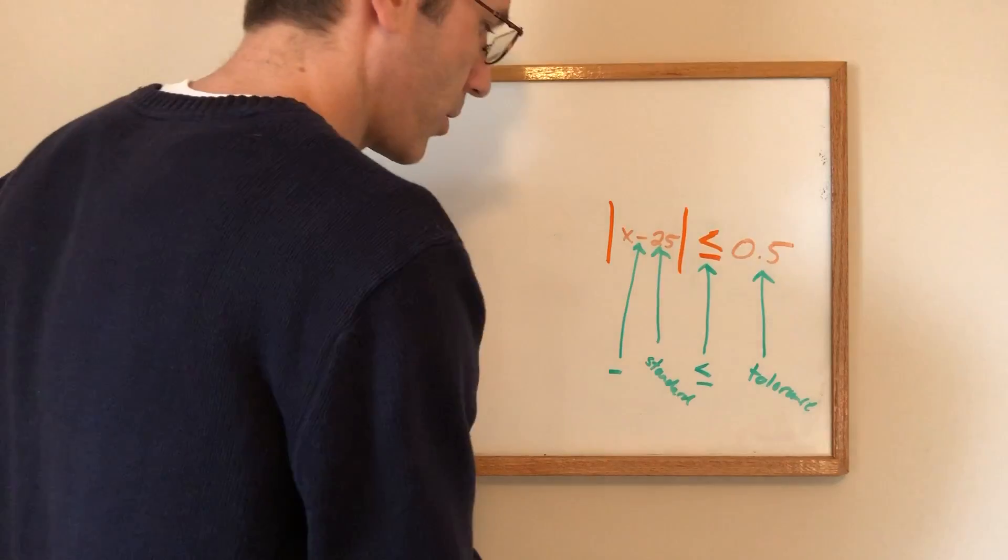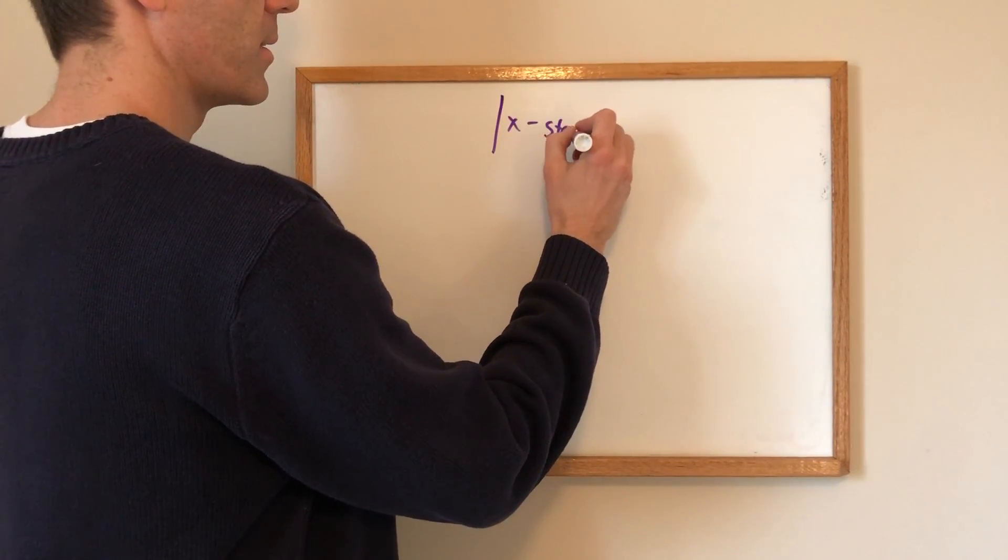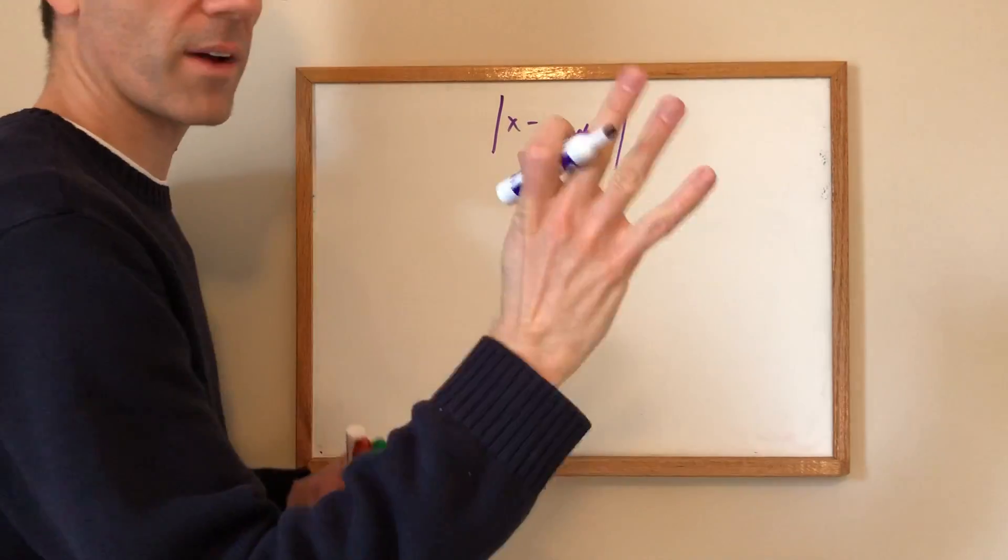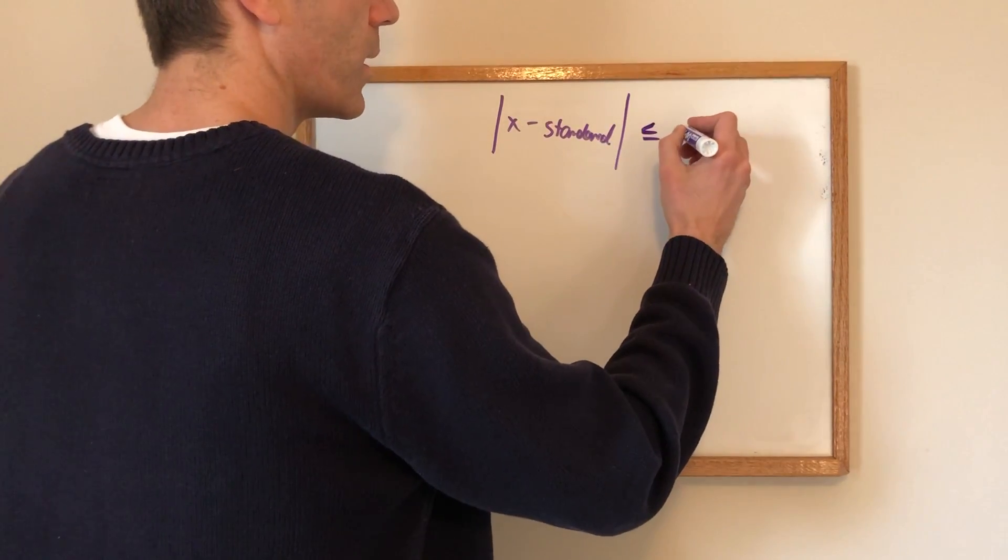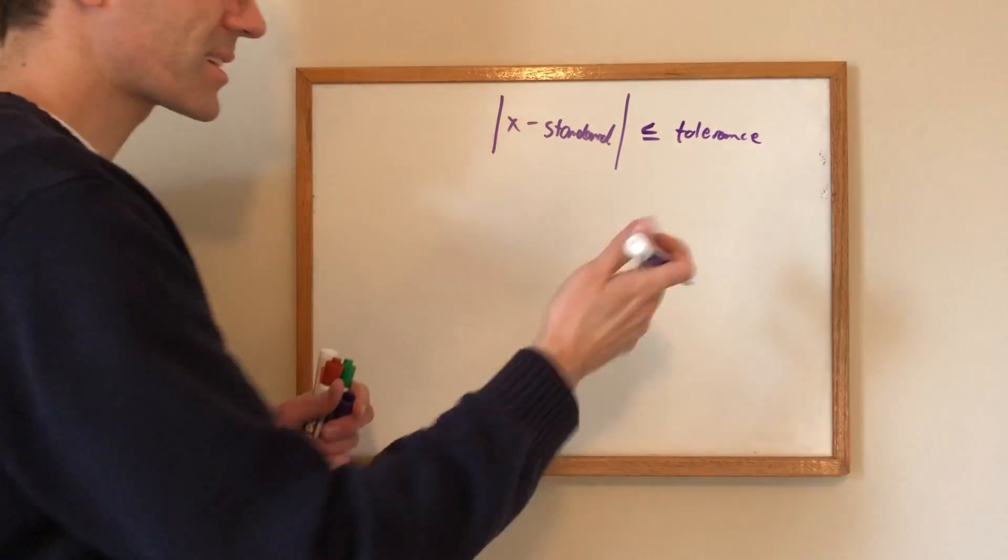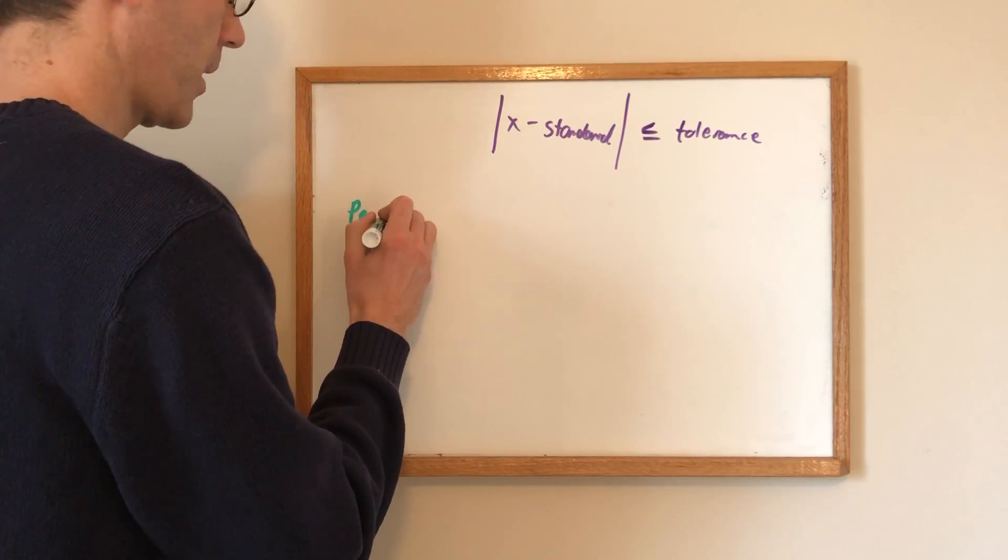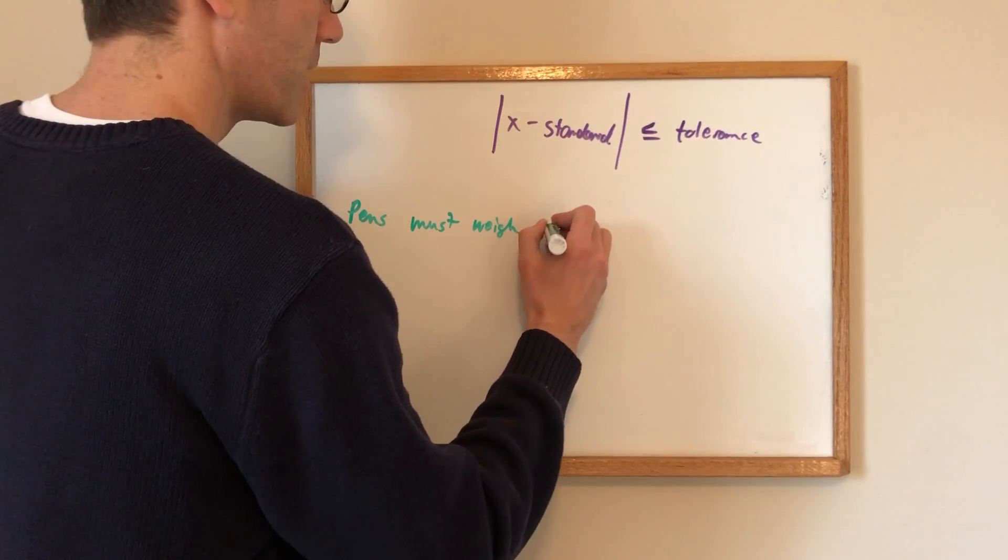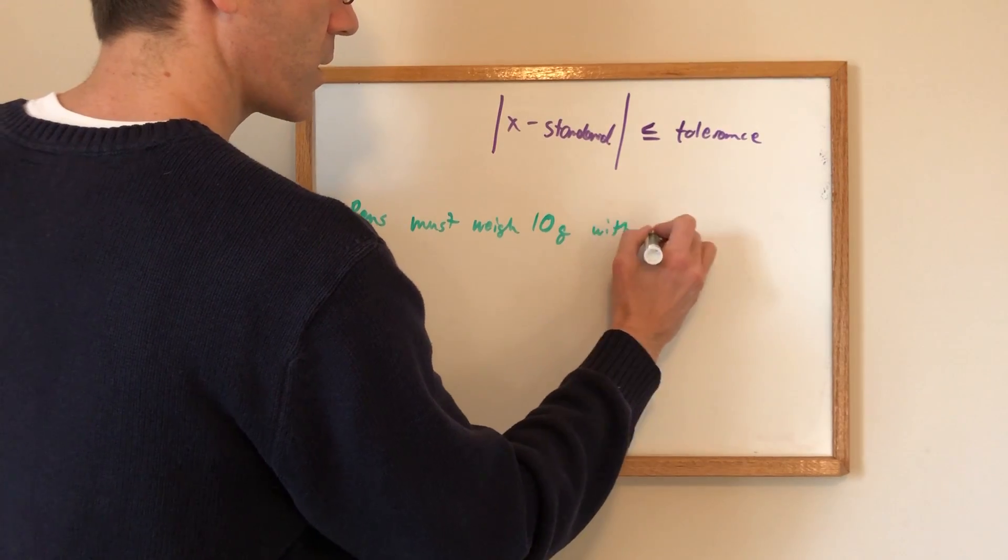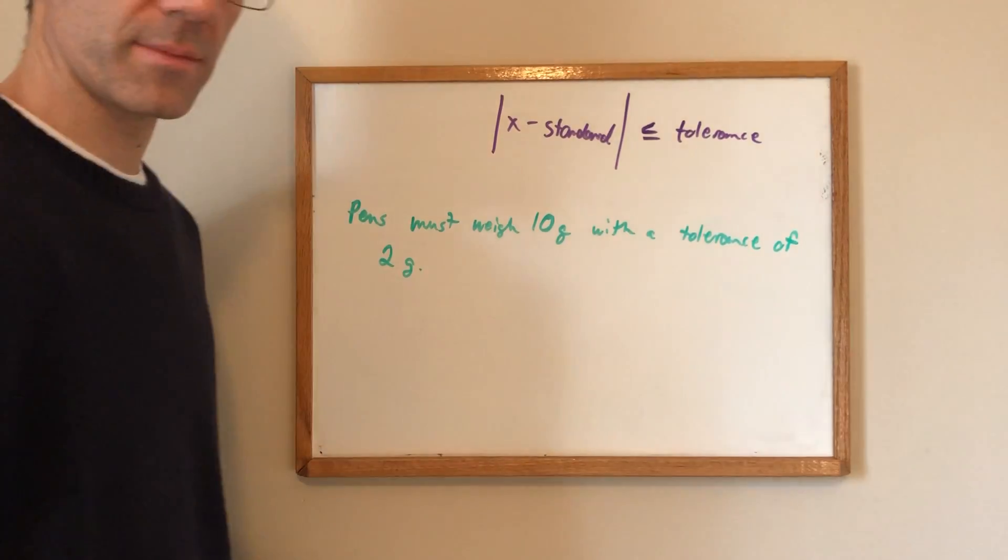So let's do it. The next problem and I'm not going to write it out word for word has to do with the weight of a pen. So I'm going to write this out. x minus standard less than or equal to tolerance and this is basically your formula that we're going to use and so the next problem says pens must weigh or have a mass of 10 grams with a tolerance of 2 grams and then it says write an inequality that represents this.